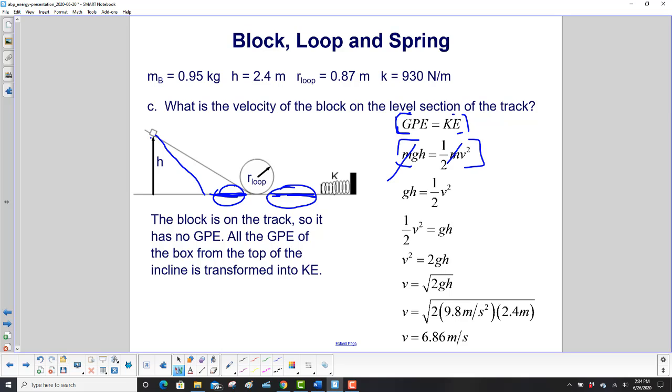Once again, masses cancel out, so no matter how heavy that block is, it will have the same velocity. Again, we're dealing without friction here, and we're not worrying about the shape of the block or anything confusing. We're making this very straightforward. So we have gh is one-half v squared, switch sides, multiply both sides by two, and you get this.